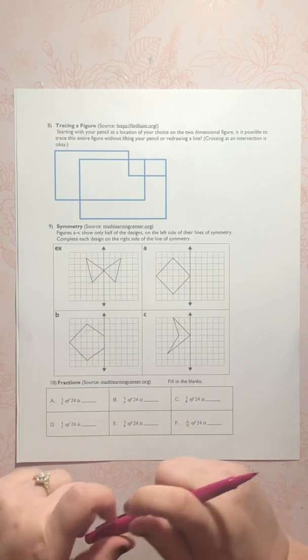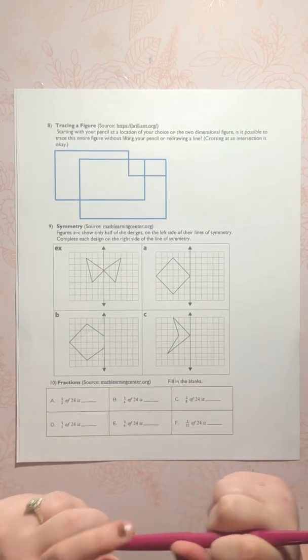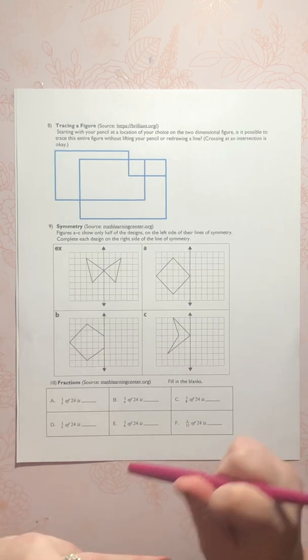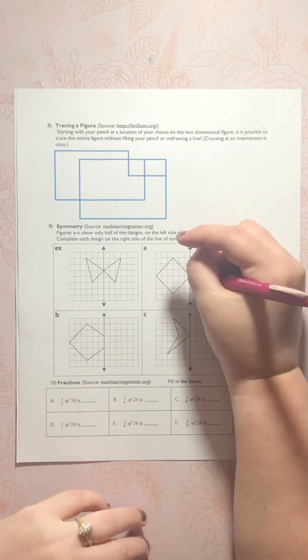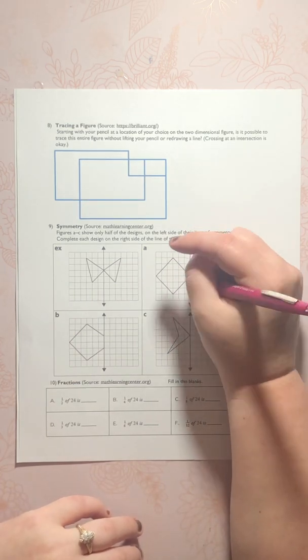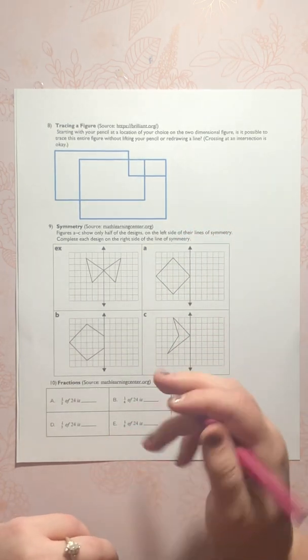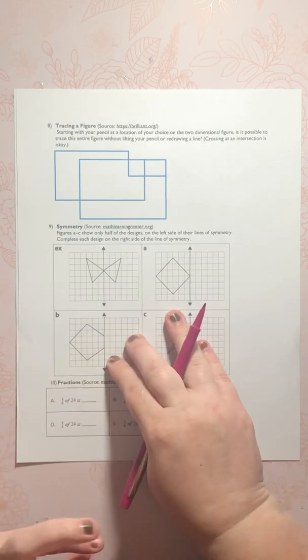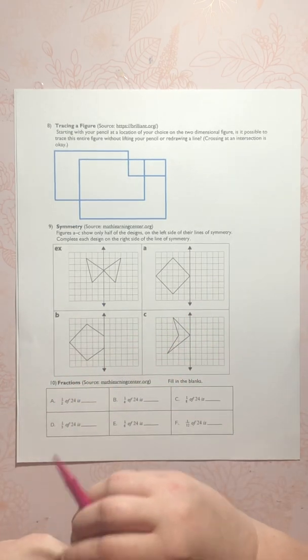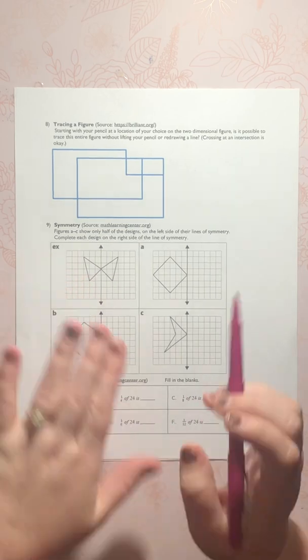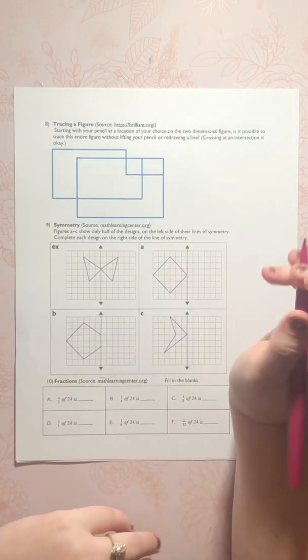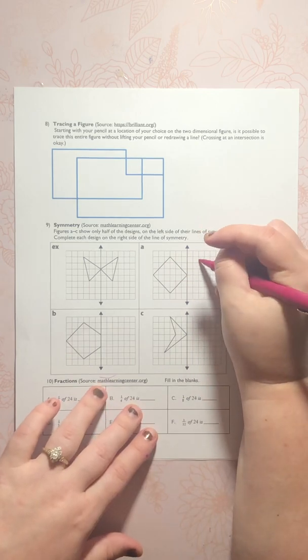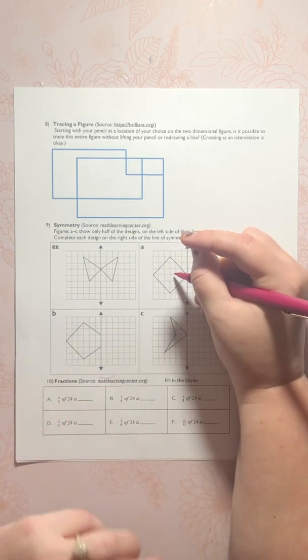Okay, so today we're going to be looking at number 9 of the math packet which talks about questions regarding symmetry, specifically having to draw the opposite side of the shape on the coordinate plane. It shows only half of the designs on the left side of their lines of symmetry. When it says line of symmetry that means that the right side is going to be exactly the same as what the left side shows.